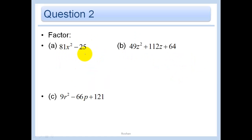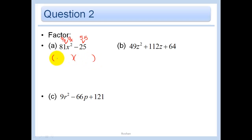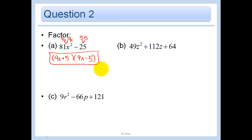The difference of two squares - my favorite kind - because this is just 9x times 9x, and this is just 5 times 5. And so I have 9x plus 5 times 9x minus 5. That's my easiest kind, I think.